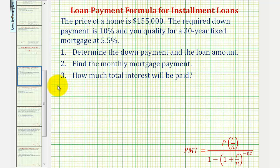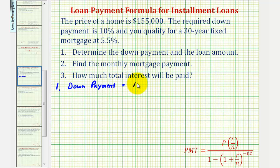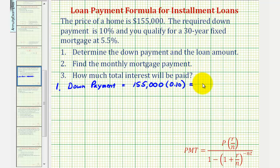For number one, since the down payment requirement is 10 percent, we want to find 10 percent of $155,000. So that would be $155,000 times 10 percent expressed as a decimal, which would be 0.10, or just 0.1. This would be $15,500.